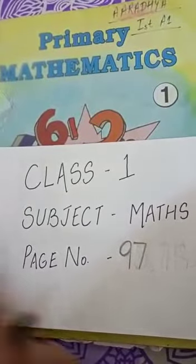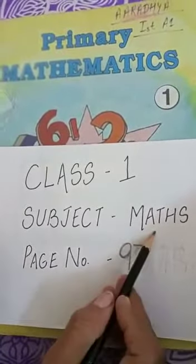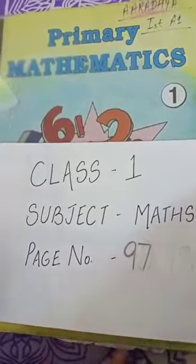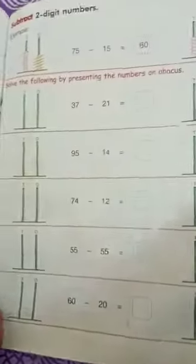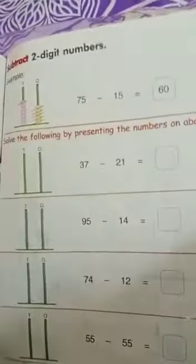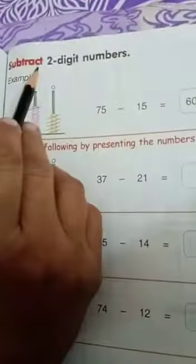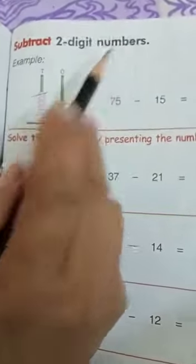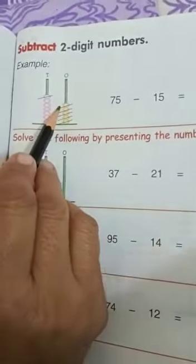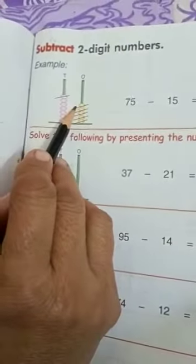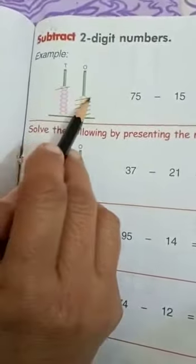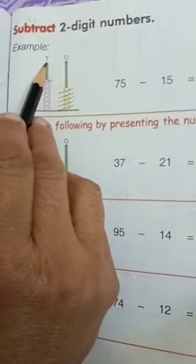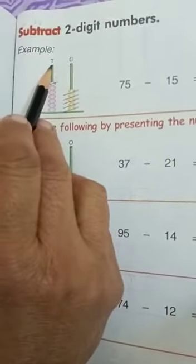Good morning students. Take out your math book, page 97. We will subtract two-digit numbers. An example is given here. This is an abacus. O stands for 1's and T stands for 10's.